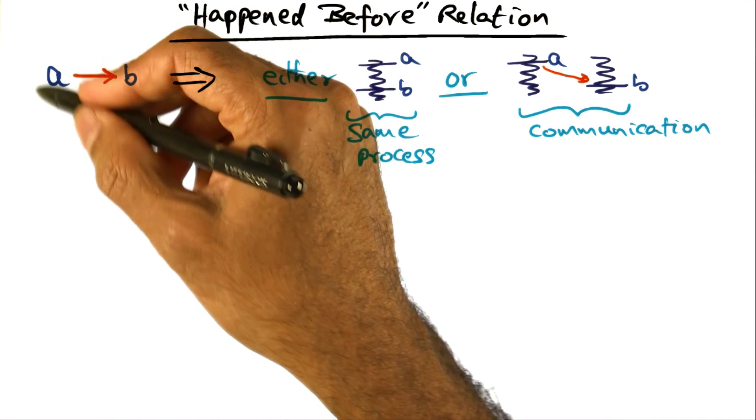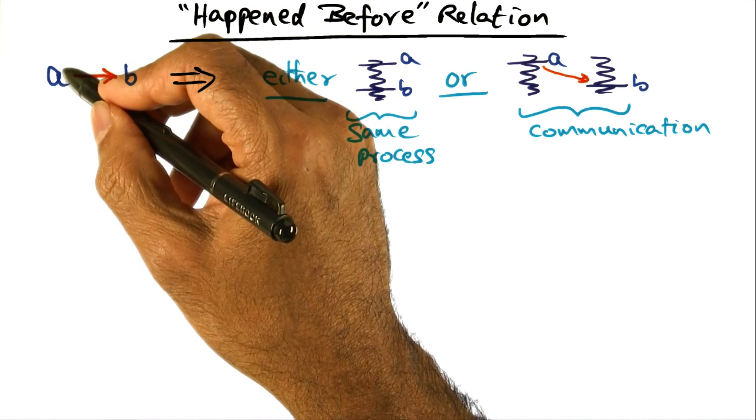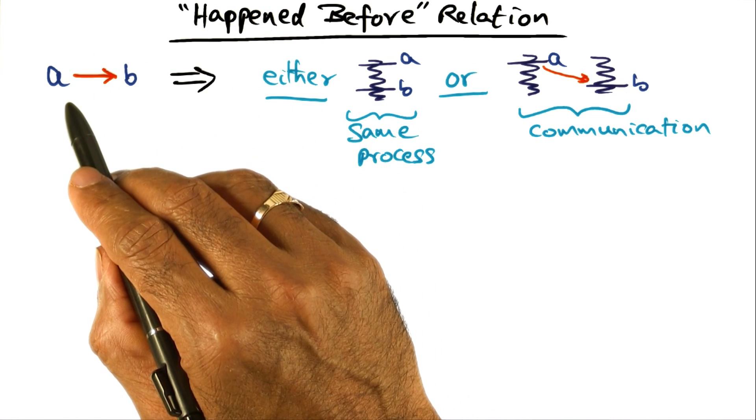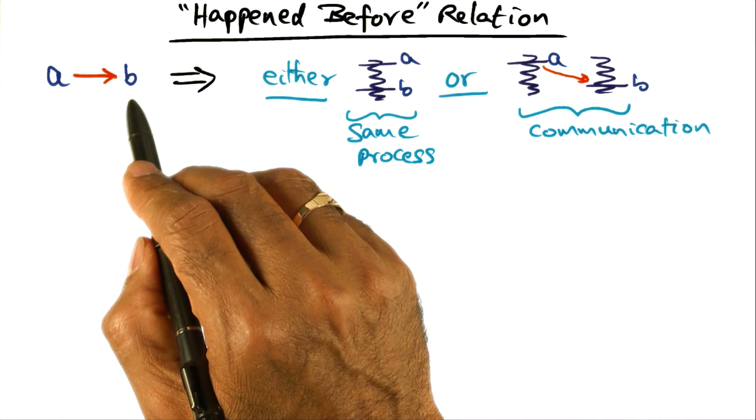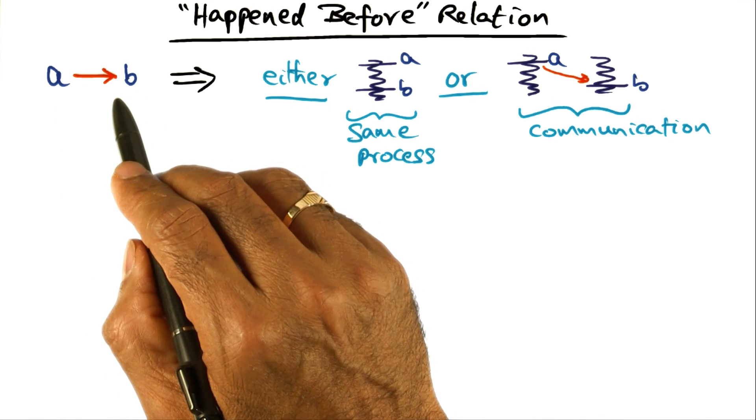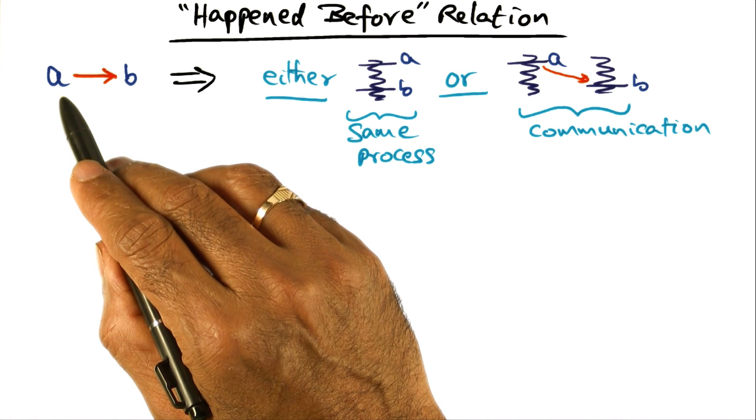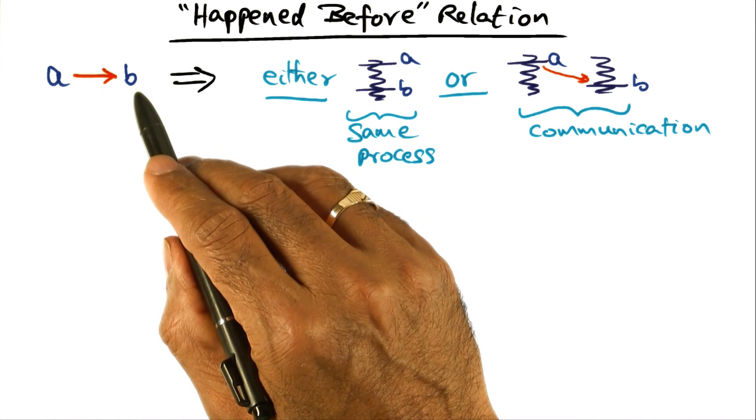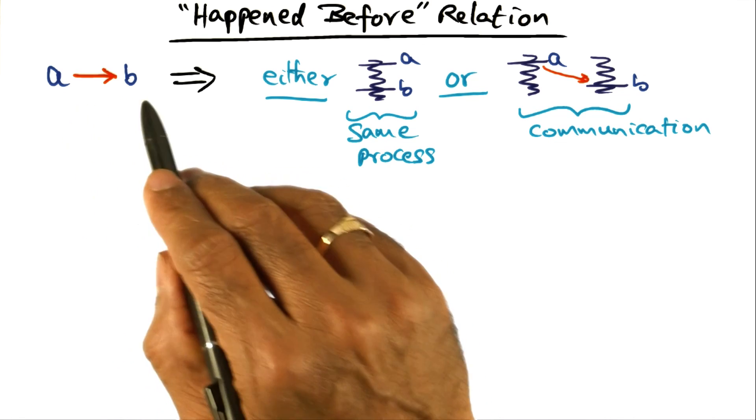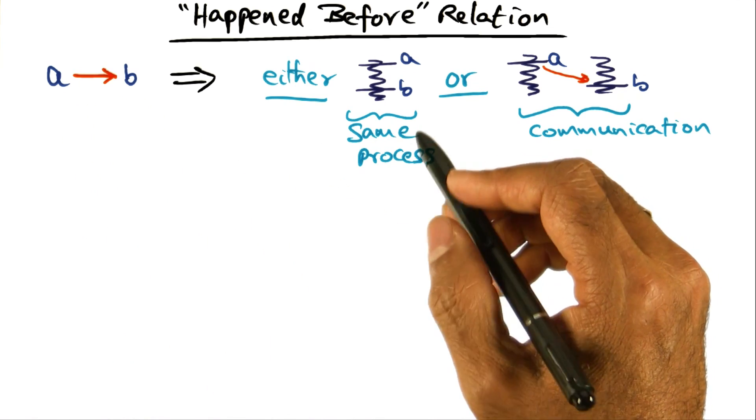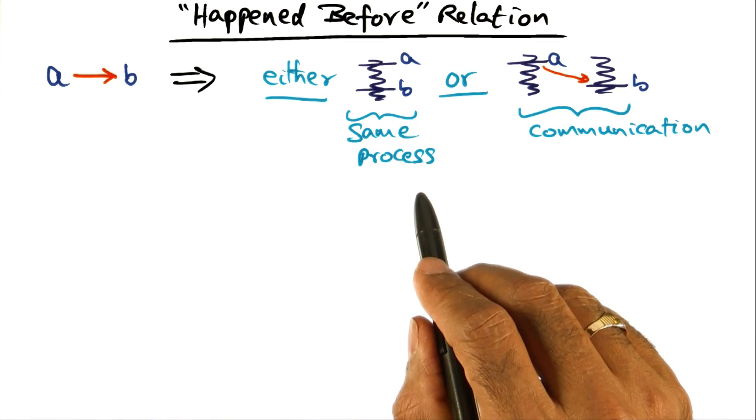So this is the implication of saying that an event in a distributed system A happened before B. And these events can be anywhere in the system. An event could be happening A and another event could be happening B. And if we are asserting that A happened before B, what we are implying is one of these two possibilities.